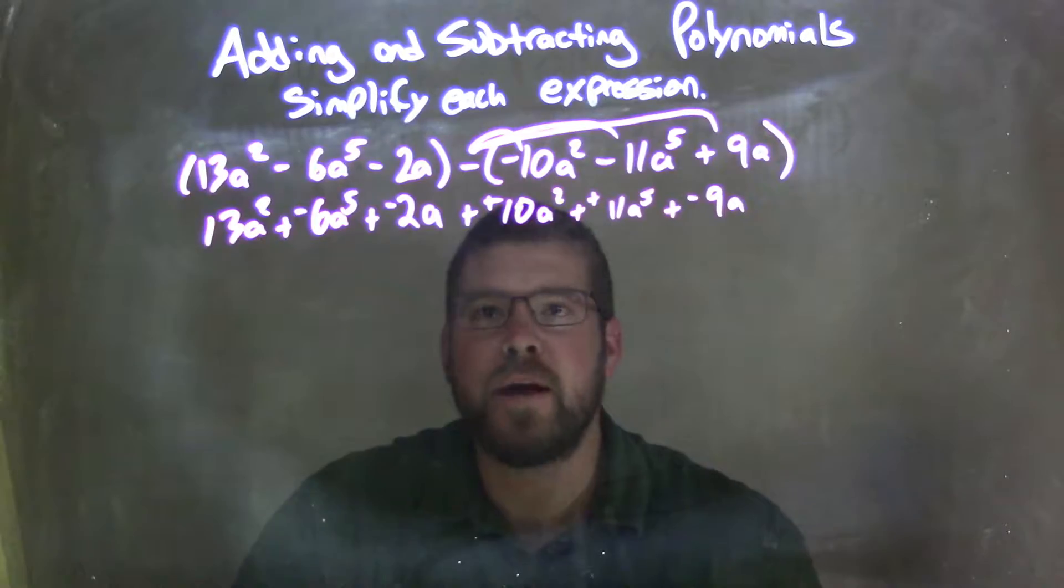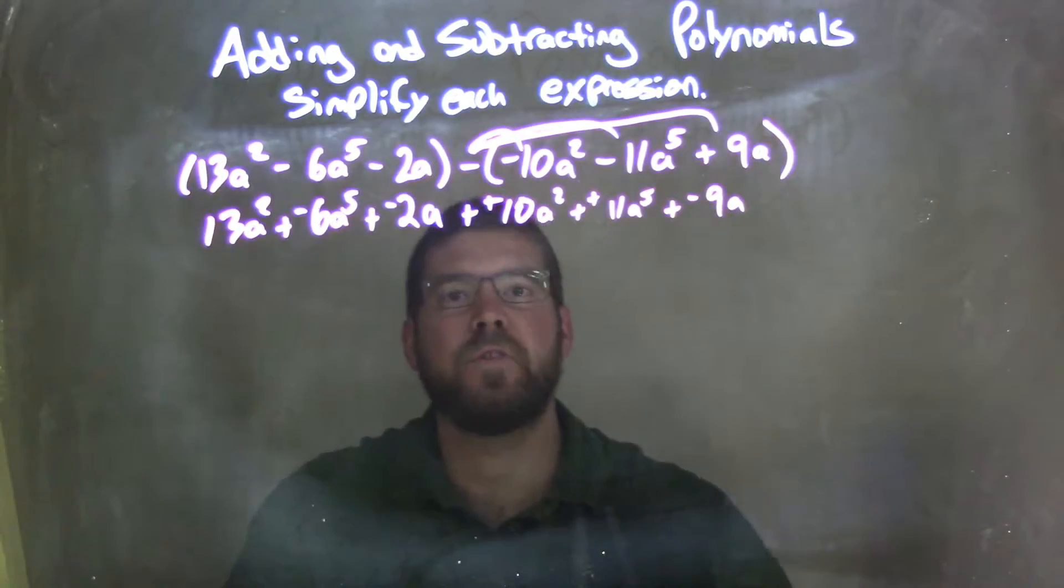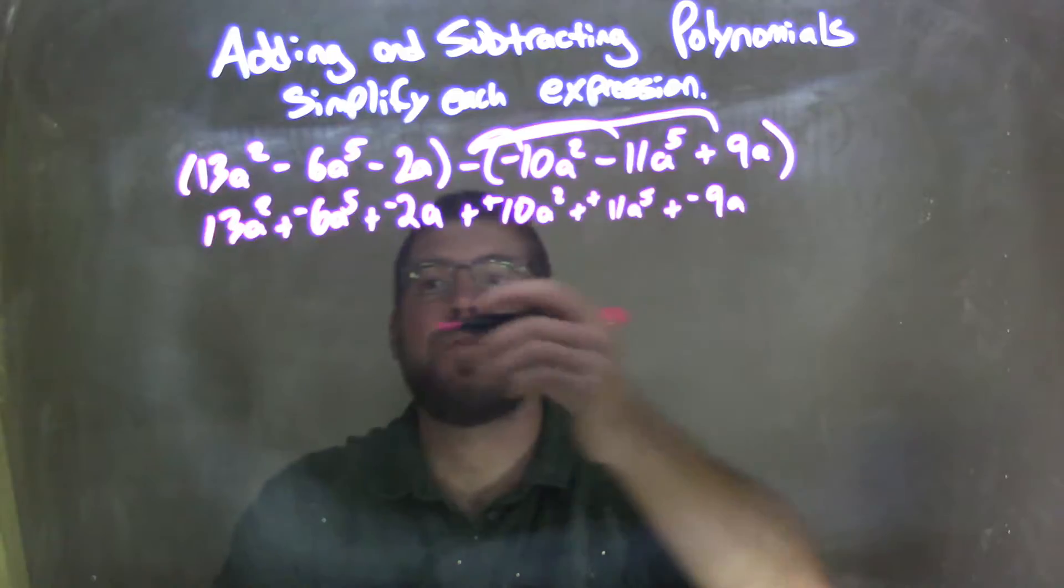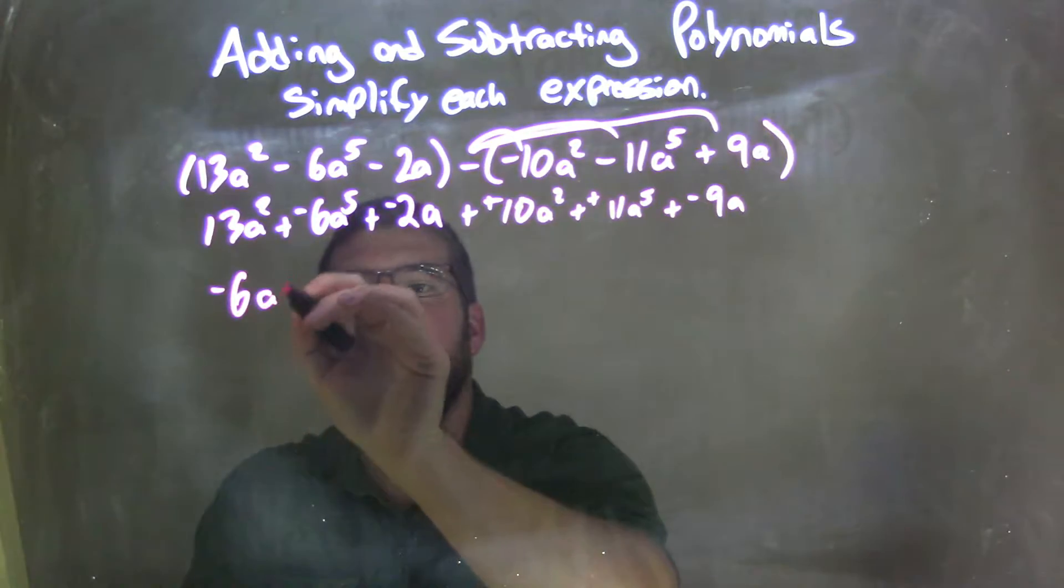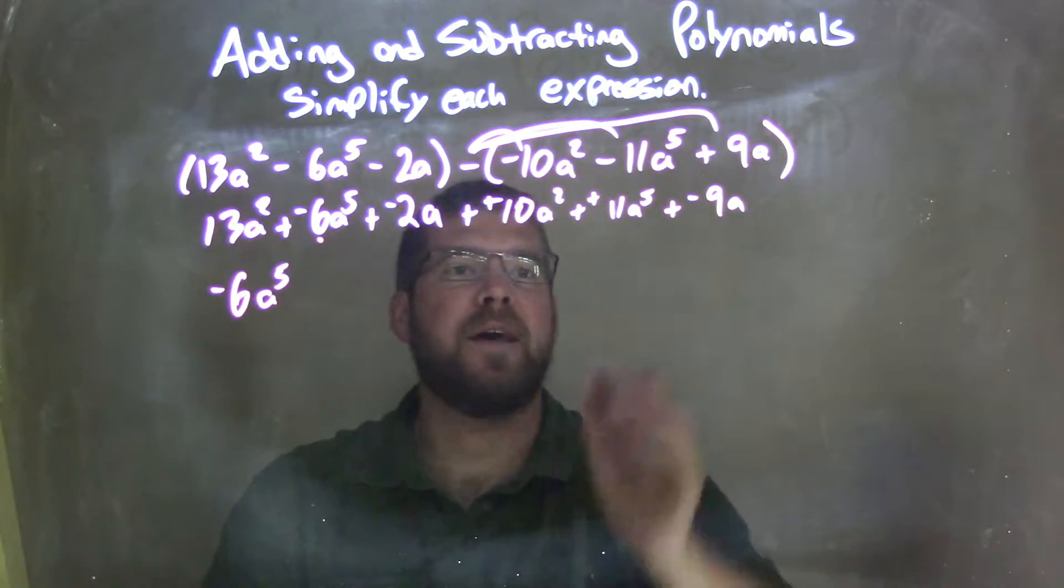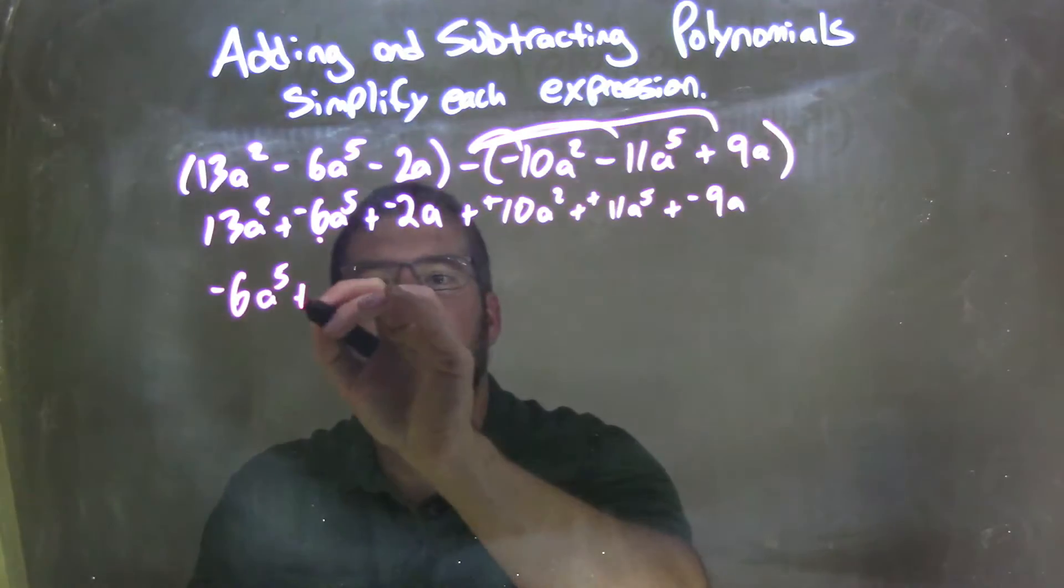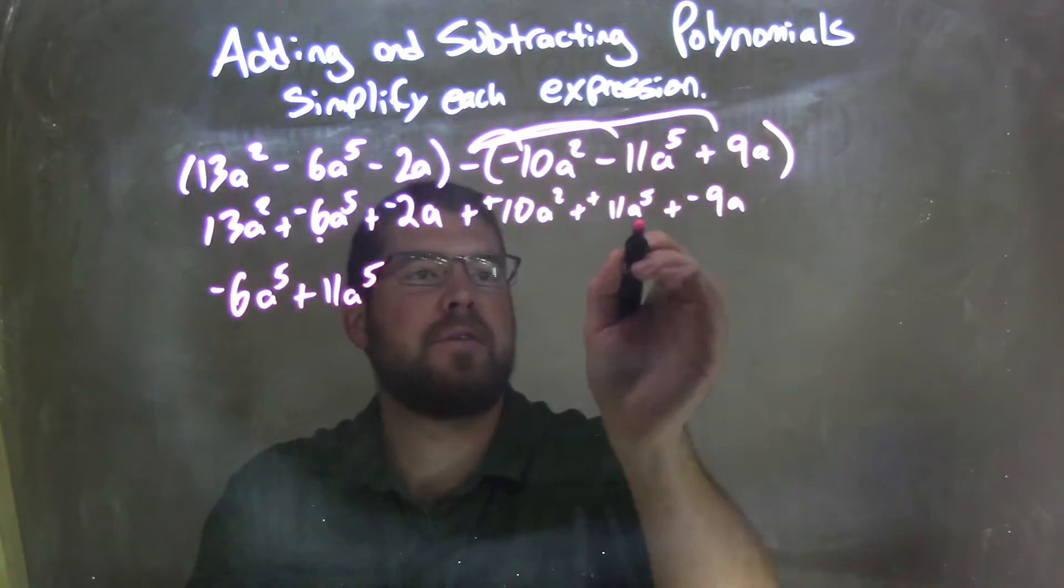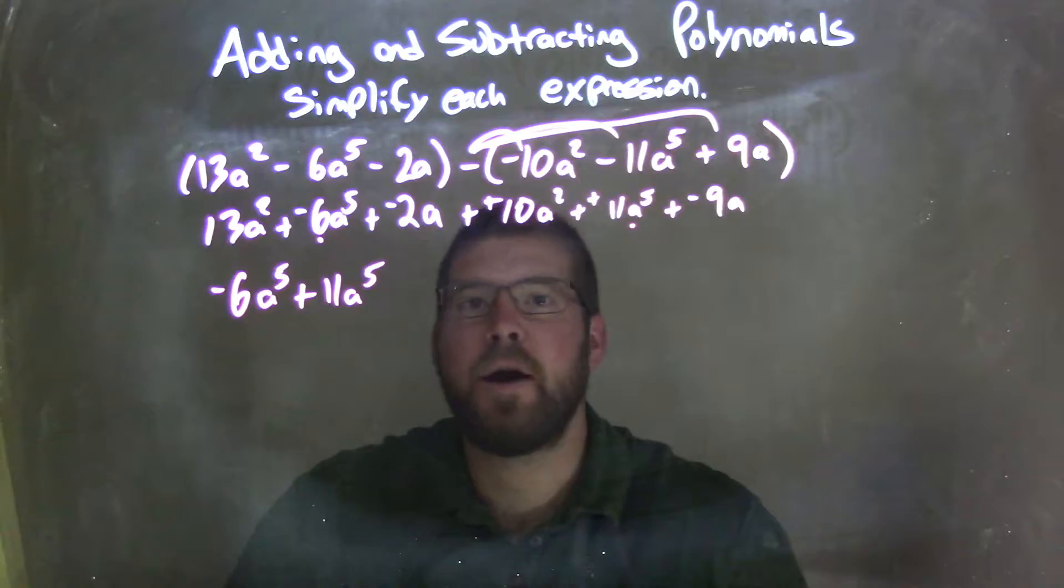So now, I'm going to rearrange my like terms together and my highest degrees first. So the highest degree I see is to the 5th power. We have a negative 6a to the 5th. Put a dot to bring that down. Plus 11a to the 5th. I don't see anything else to the 5th power.